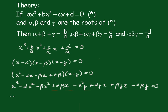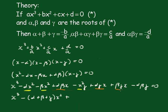Now collecting like terms we get X³, and taking all the X² terms — highlighted here — that gives -(alpha + beta + gamma)X², then taking all the X terms that becomes (alpha·beta + alpha·gamma + beta·gamma)X, and finally -alpha·beta·gamma = 0.